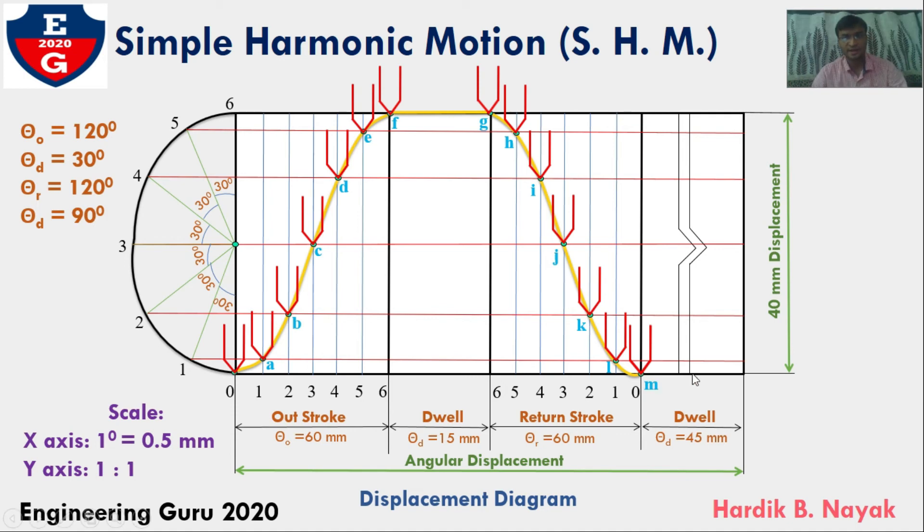For the remaining 90 degrees, it remains at bottom position. I will draw a dark line to indicate dwell for the remaining cycle. The follower moves this way.